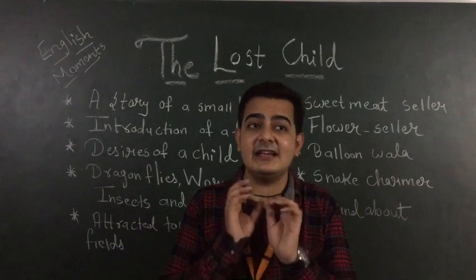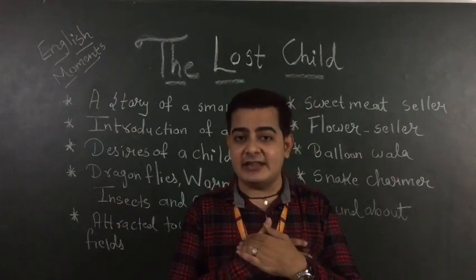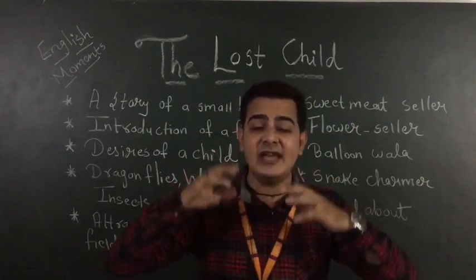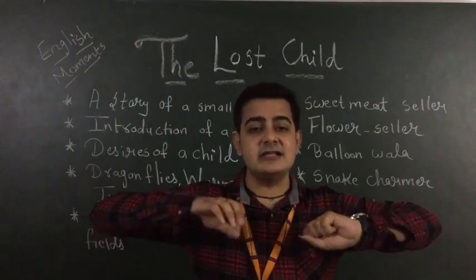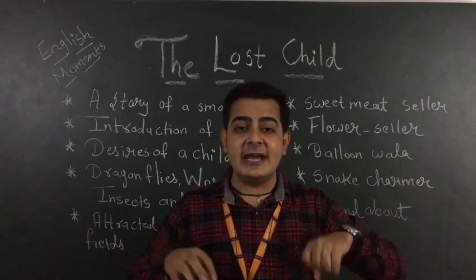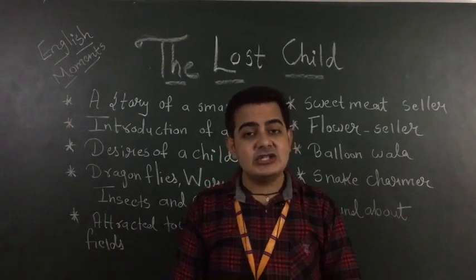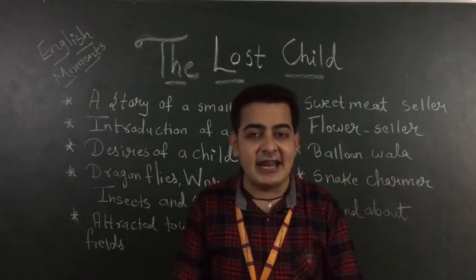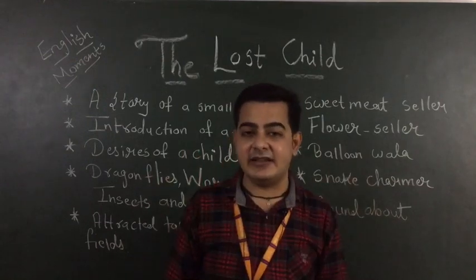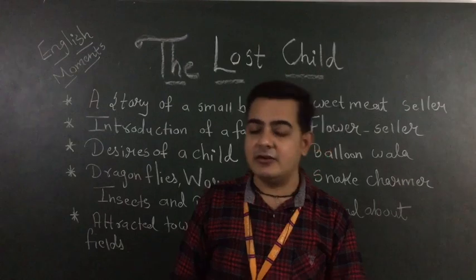From this chapter, we can see that whenever our parents are with us, we want everything. But when they just go aside from us — even if we are not truly lost — we get frightened, afraid, we have tears. That is the importance of parents. Whenever our parents are with us, we are fascinated with each and everything. When they are gone, we don't want anything. We just want our mother and father.